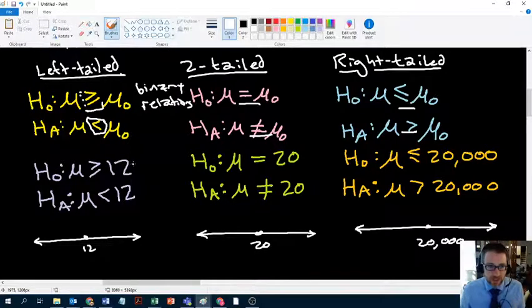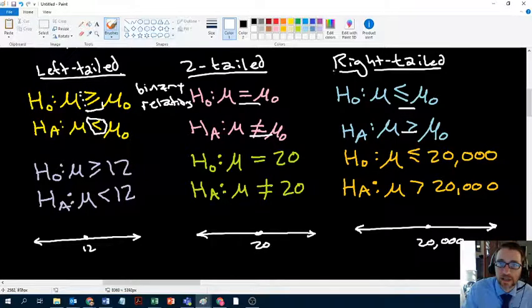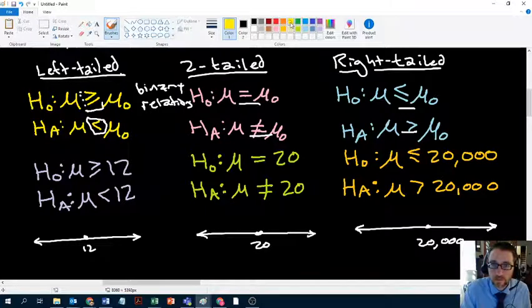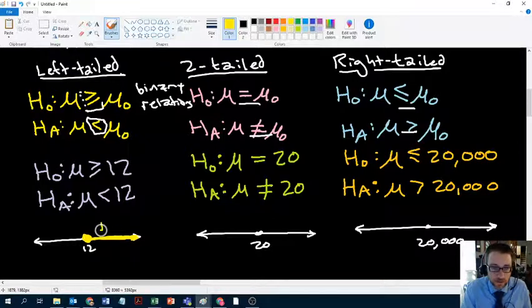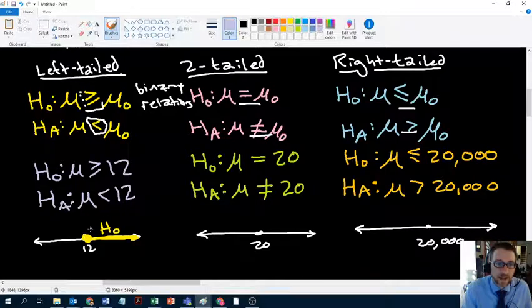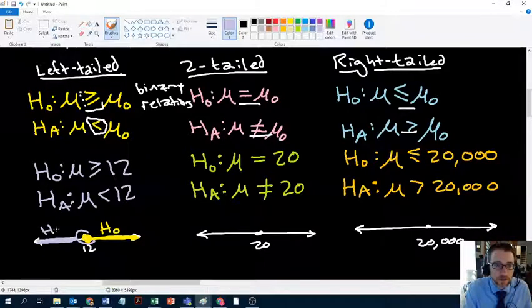In each of these cases, the binary relations are very carefully chosen. In a left tailed test, the null says that either the specific value or anything larger than that. If mu takes those values, any of those values, then the null is covering that. And if mu takes not the 12, but anything below it, anything below that claimed value, the hypothetical value of mu, then the alternative takes care of that.